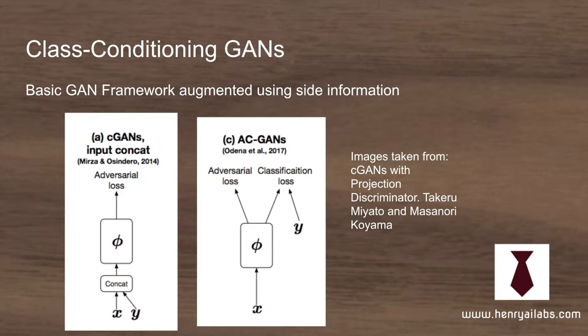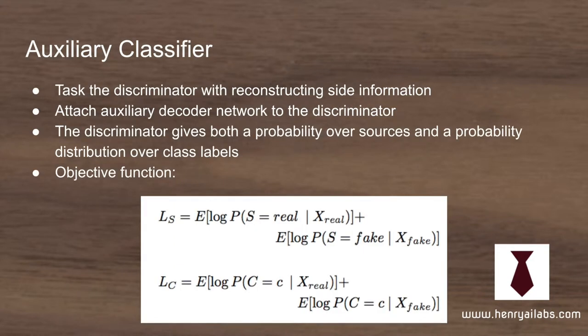What the ACGAN does is build on the idea of having a class conditional prior input, and it tasks the discriminator with reproducing that input. So when the generator receives a class label to generate a cat, the discriminator has to not only predict real or fake, but it also should label it as a cat. This shows the loss function formed now that the discriminator is made up of two parts: real and fake, and a classifier that predicts the class labels of the real and generated images.